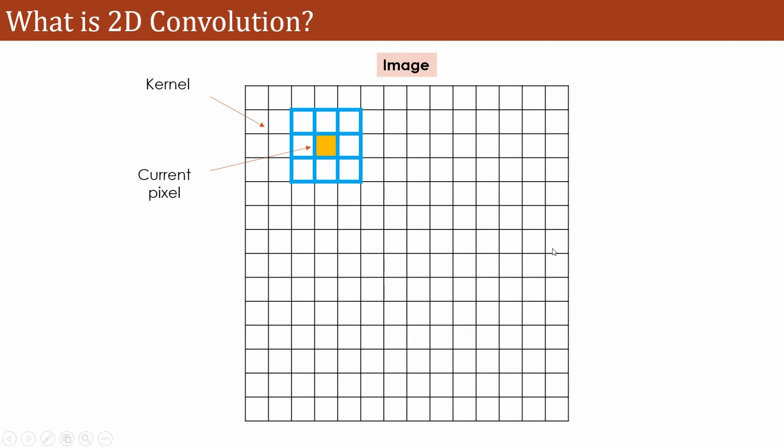When the pixel value of the image is changed, the output will be obtained. So this is a fundamental 2D convolution operator. Depending on the value of the kernel, different operations like blurring, sharpening, and smoothing can be obtained.